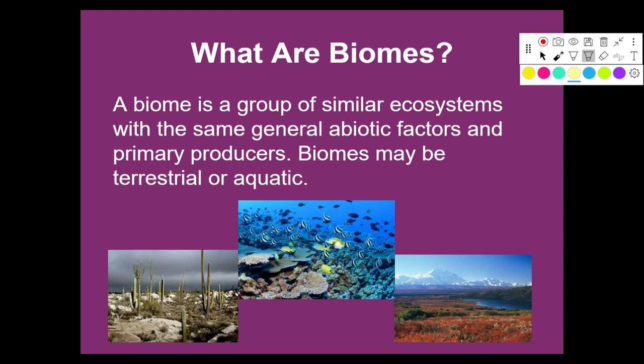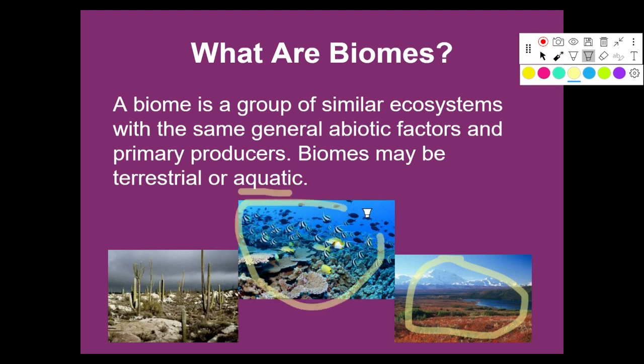A biome is a group of similar ecosystems with the same general abiotic factors and primary producers. Biomes may be terrestrial or aquatic. Examples include deserts, rainforests, and tundra — a very cold area where plants barely grow. The U.S. has many different biomes: tropical areas in the south, temperate deciduous forests in the east, deserts in California and Nevada, and tundra near the polar ice caps. Biomes are classified by climatic factors — how hot, cold, wet, or dry an area is — and by types of primary producers.